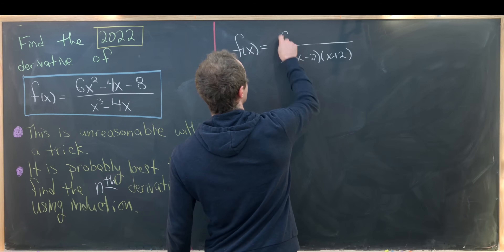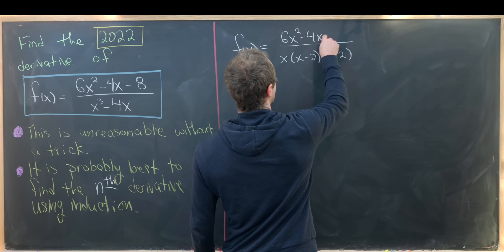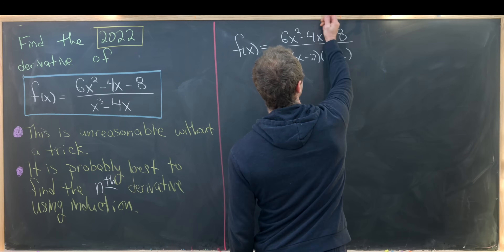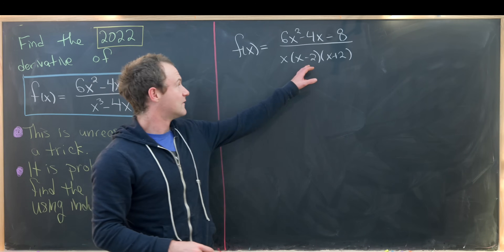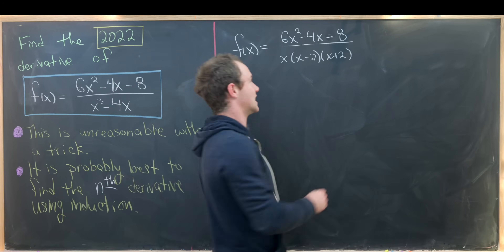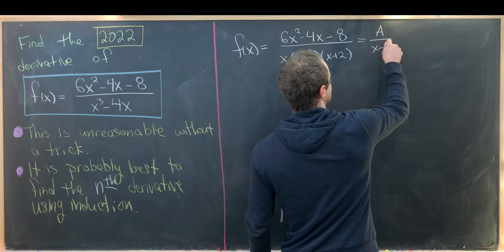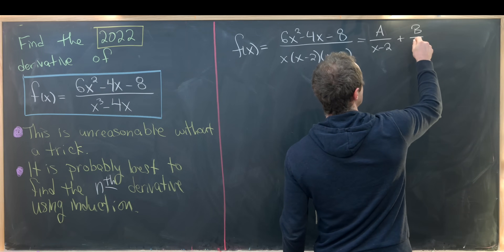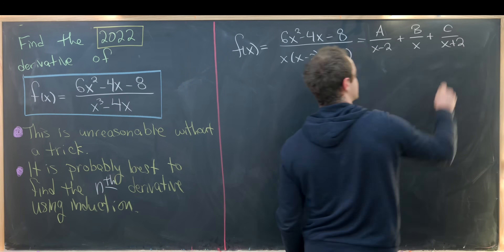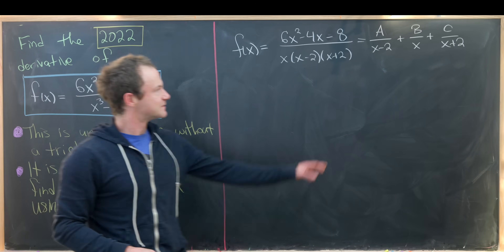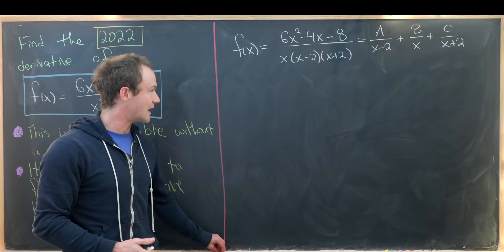So we have 6x squared minus 4x minus 8 in the numerator, and we're going to split this up for each factor in the denominator. This should split up as A over (x minus 2) plus B over x plus C over (x plus 2), where A, B, and C are numbers. I wrote it this way because there's some nice symmetry.